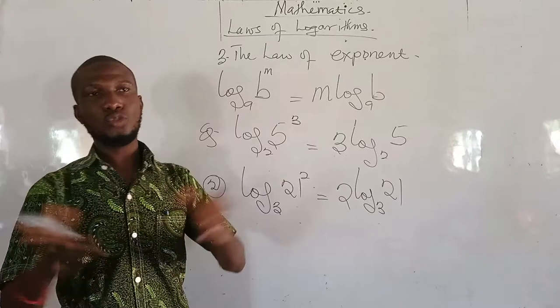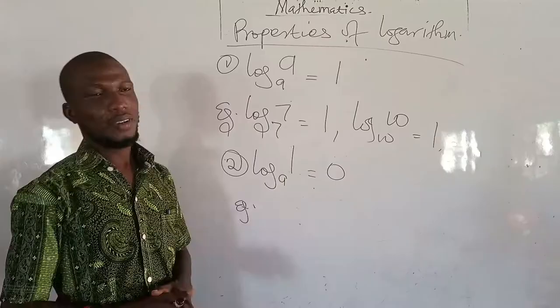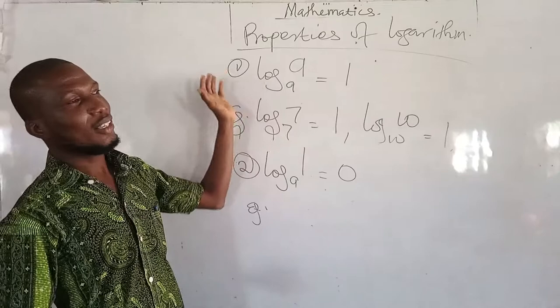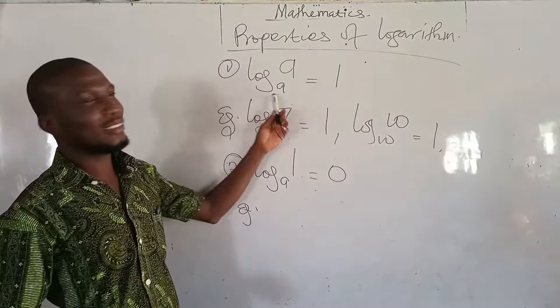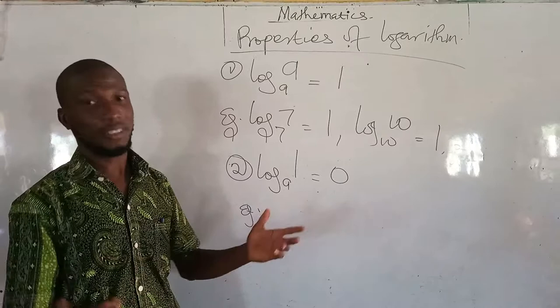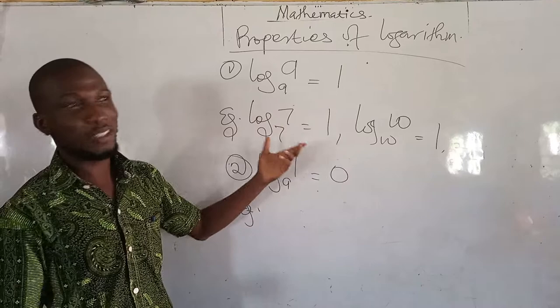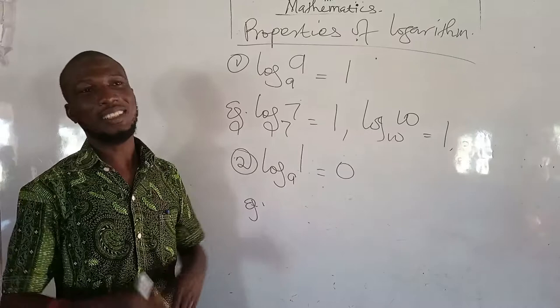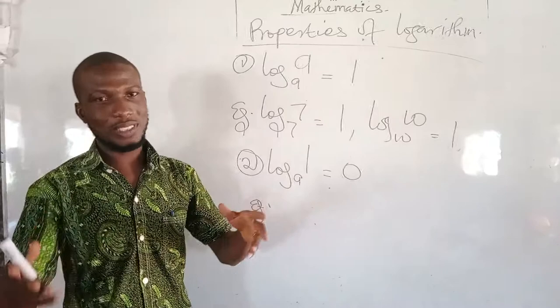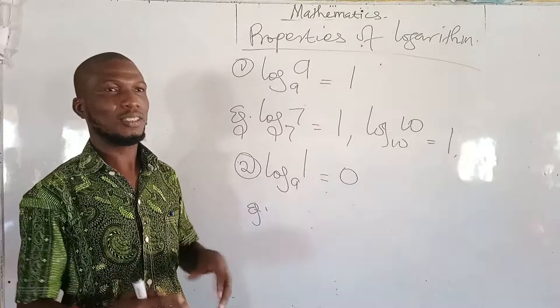There are two properties to add to our calculations. The first property is log_a(a) = 1, meaning that when you take the logarithm of a number to the same base, the answer is 1. That makes sense according to the definition of logarithm, because any number to the exponent 1 gives us the same thing. So log 7 base 7 is 1, log 10 base 10 is 1, log 81 base 81 is 1. In subsequent calculations, whenever we get a logarithm of a number to the base which is the same as that number, we use 1 to represent it.